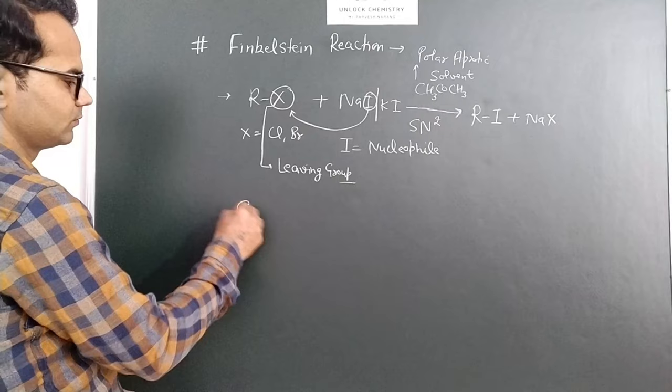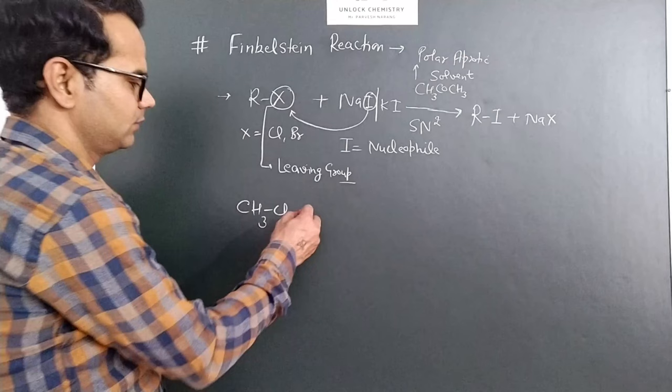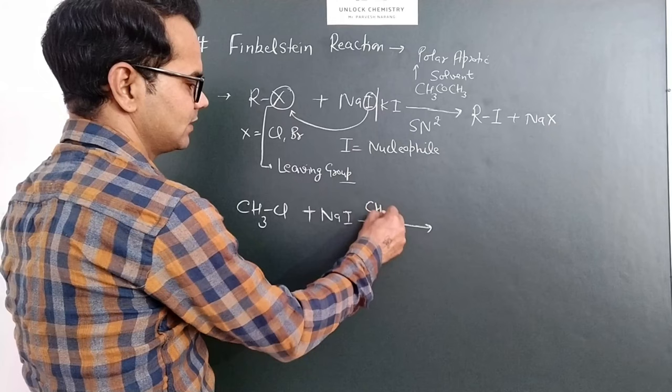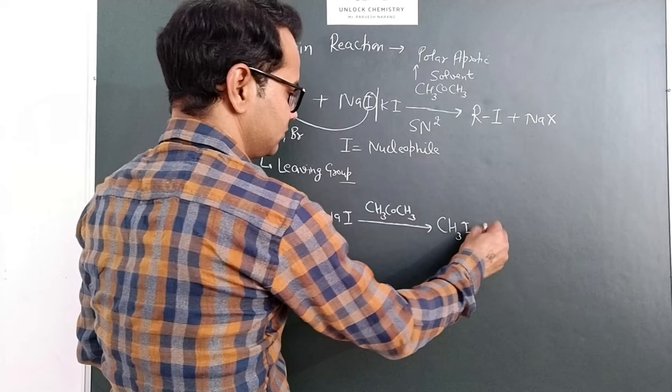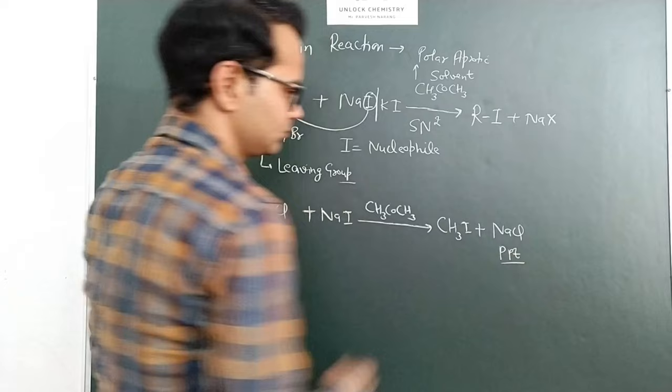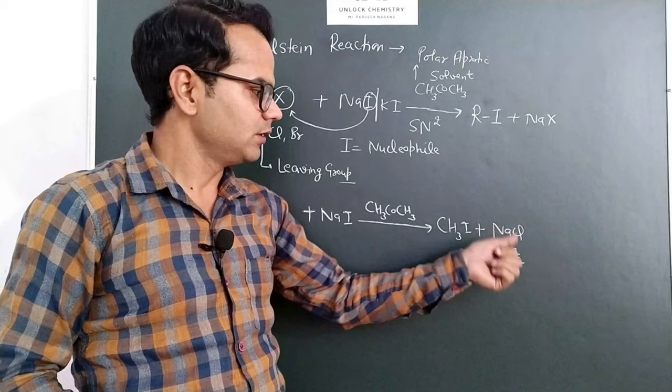For example, we use methyl chloride, CH3Cl, reacts with sodium iodide in presence of acetone. So we will get methyl iodide, CH3I, and sodium chloride.